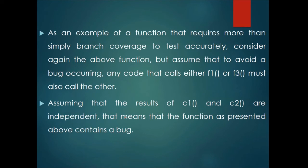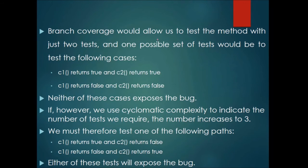As an example of a function requiring more than branch coverage: consider the above two if-then-else function, and assume that any code calling either f1 or f3 must also call the other. Assuming c1 and c2 are independent, the function contains a bug. Branch coverage allows testing with just 2 cases — for example, c1 returns true and c2 returns true, or c1 returns false and c2 returns false — but only path coverage with 4 cases will expose the bug.